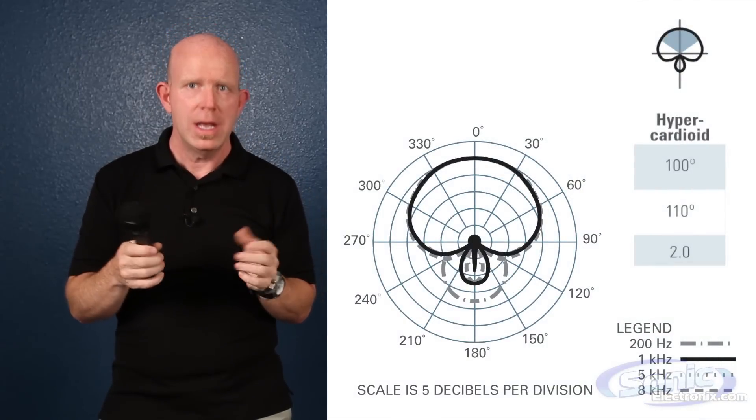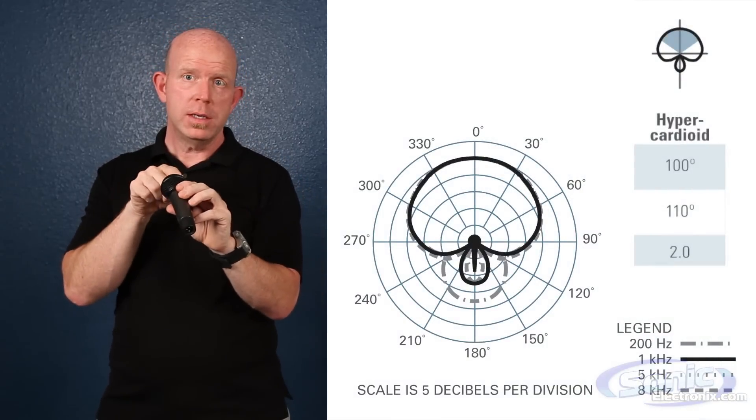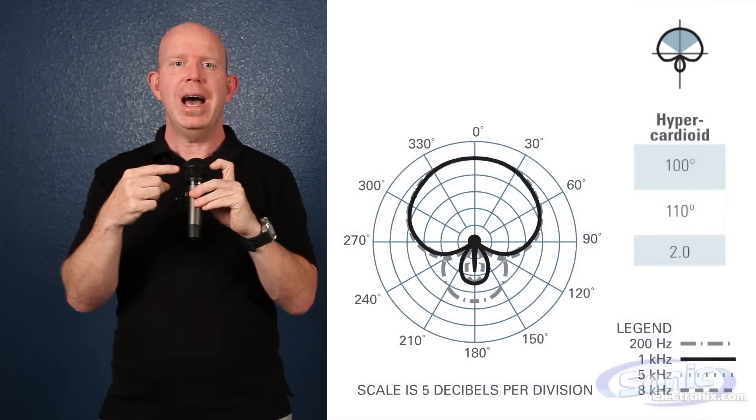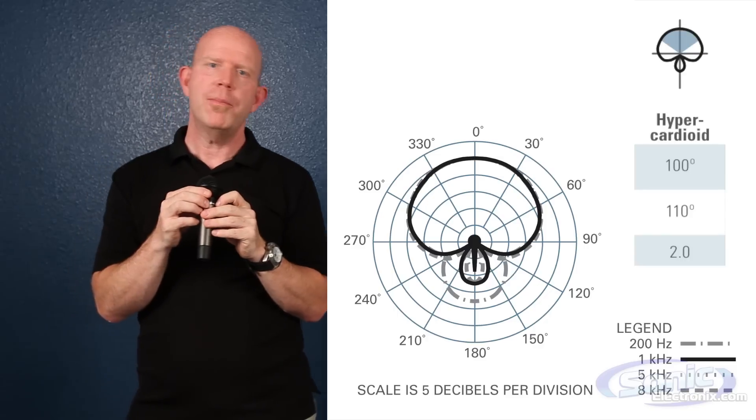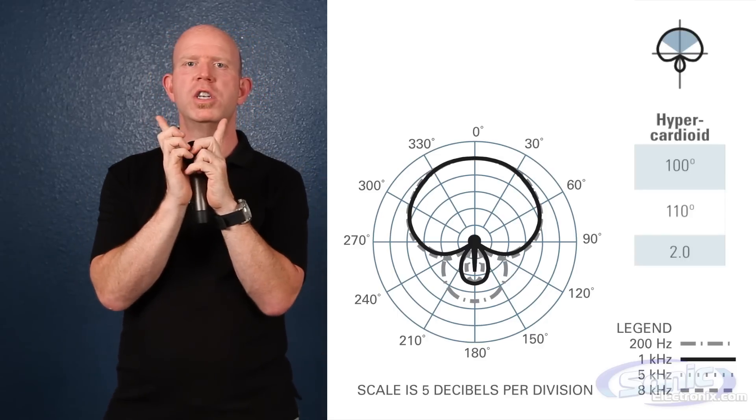Another popular polar pattern for live use is the hypercardioid. These mics, like cardioids, have the greatest pickup from the front but have more rejection from the sides. The acceptance angle of a hypercardioid is 100 degrees, so it's much tighter.